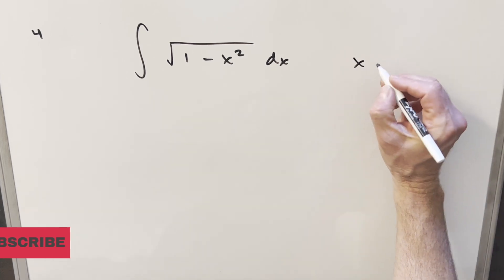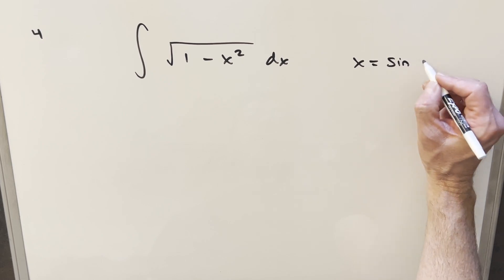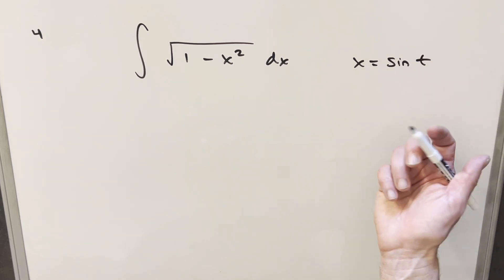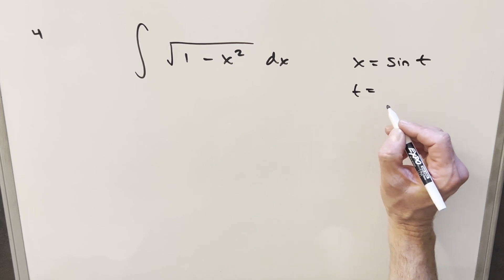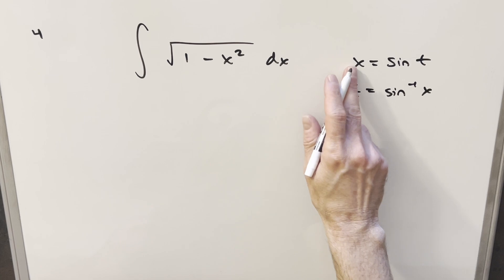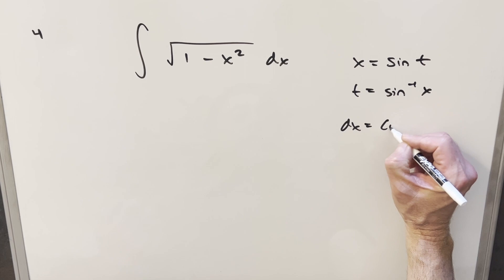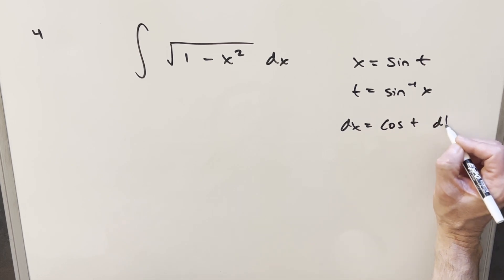what I want to do is make my substitution and set x equal to sine of t. Now we can use the inverse on this and just solve for t and find that t is going to be arc sine of x. I'll take my derivative using this first line. So our dx value, taking the derivative of sine t, we just get cos t dt.